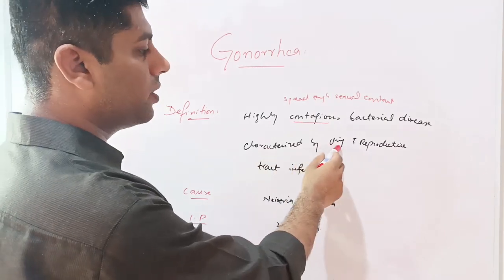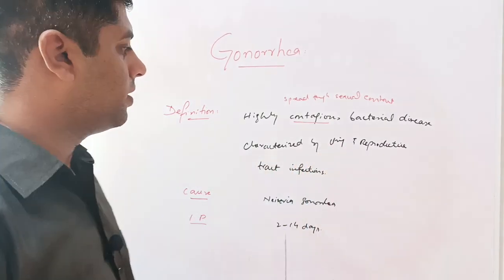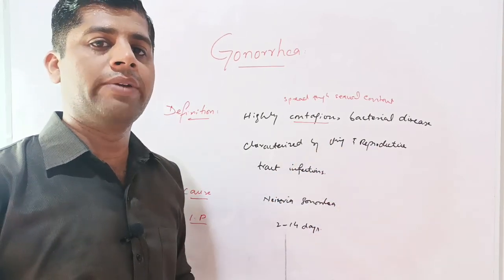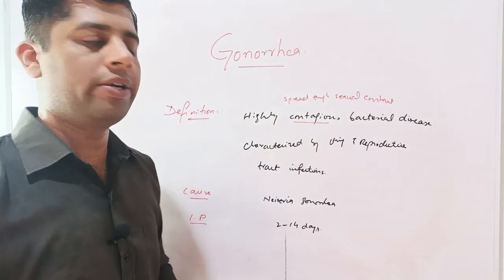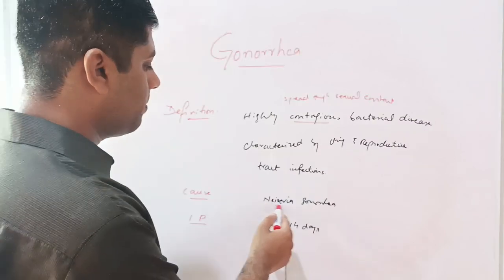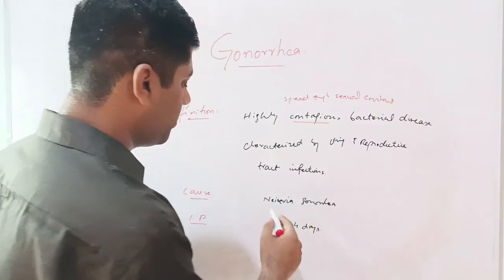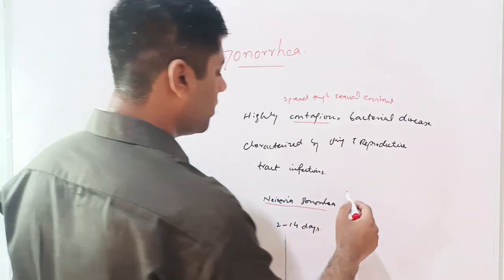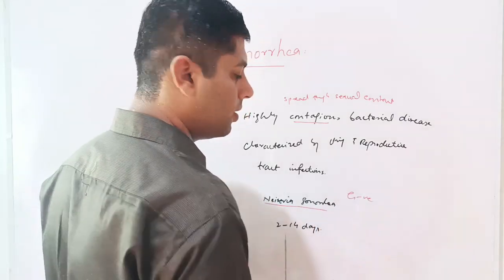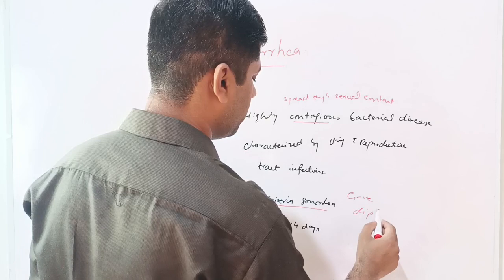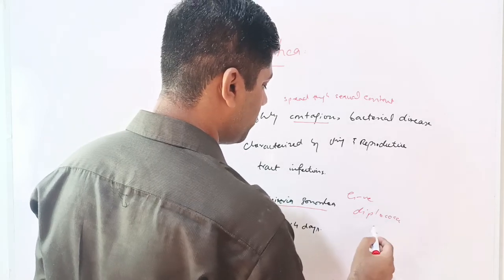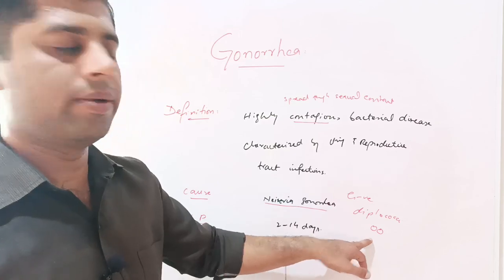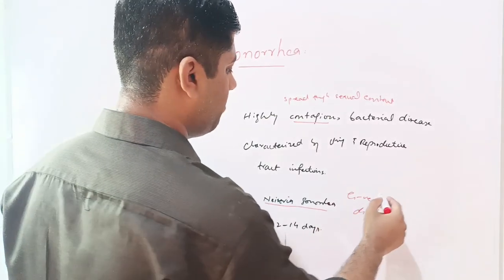Gonorrhea is characterized by urinary and reproductive tract infections. Bacteria infects the urinary tract and reproductive tract of both male and female. The incidence is common in both. It is caused by the bacteria Neisseria gonorrhea — a gram-negative, diplococci bacteria, meaning two coccus bacteria are joined together. It is non-motile.